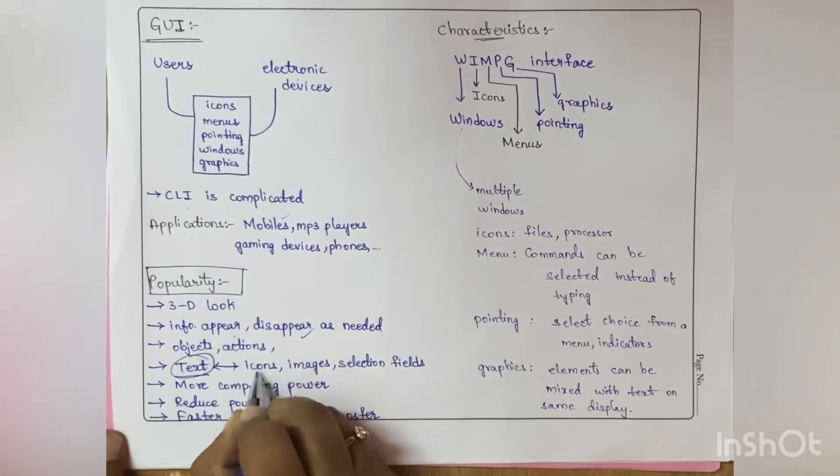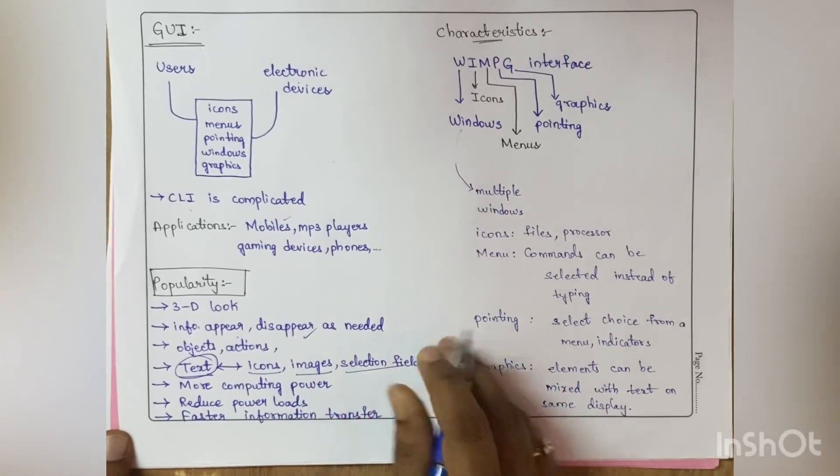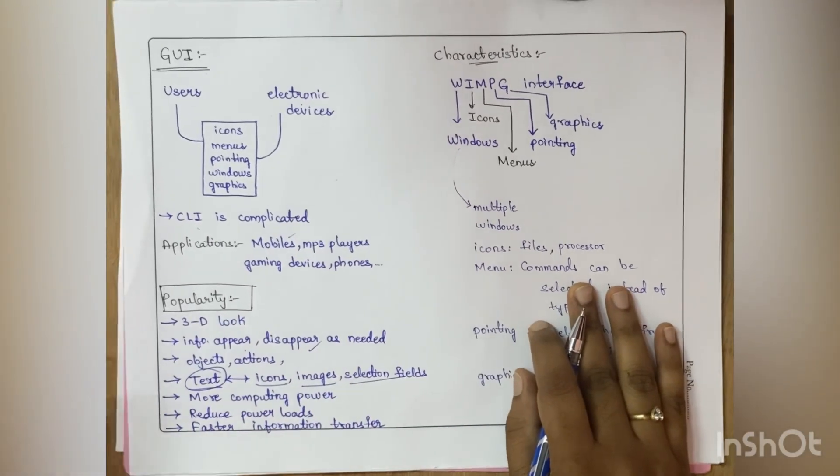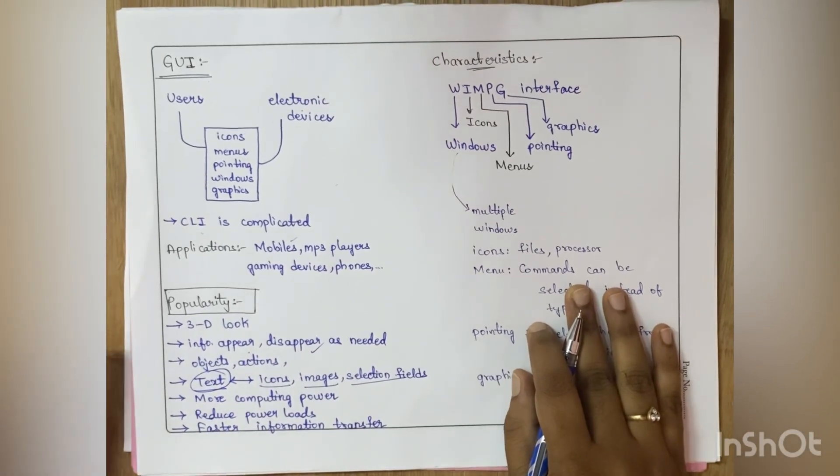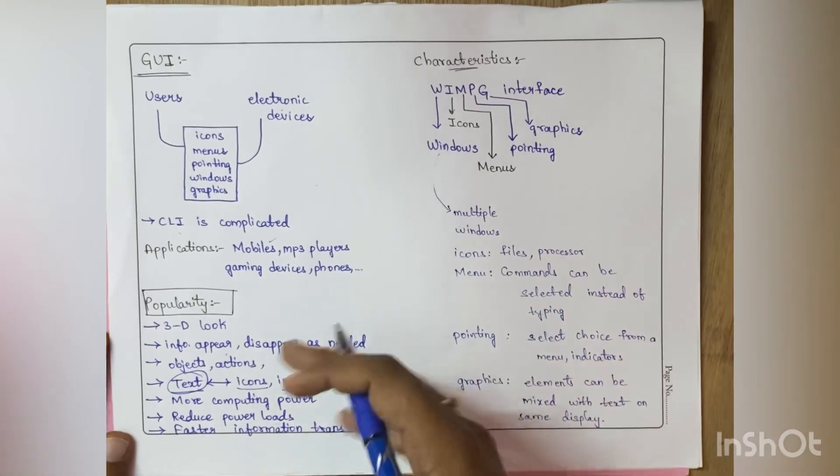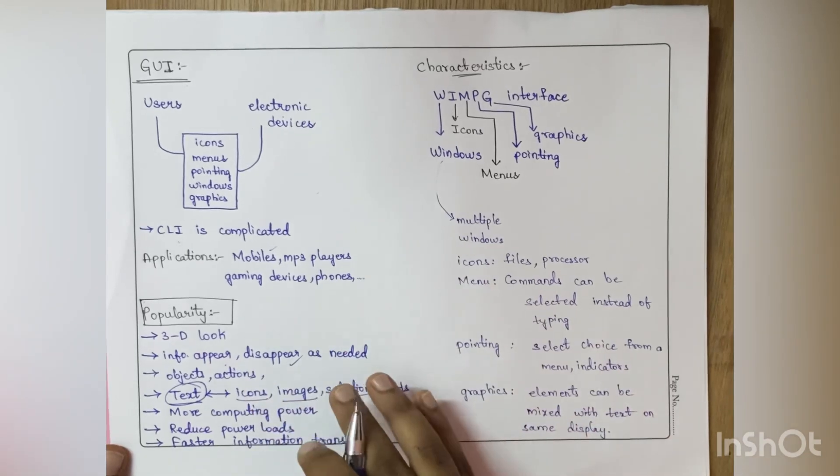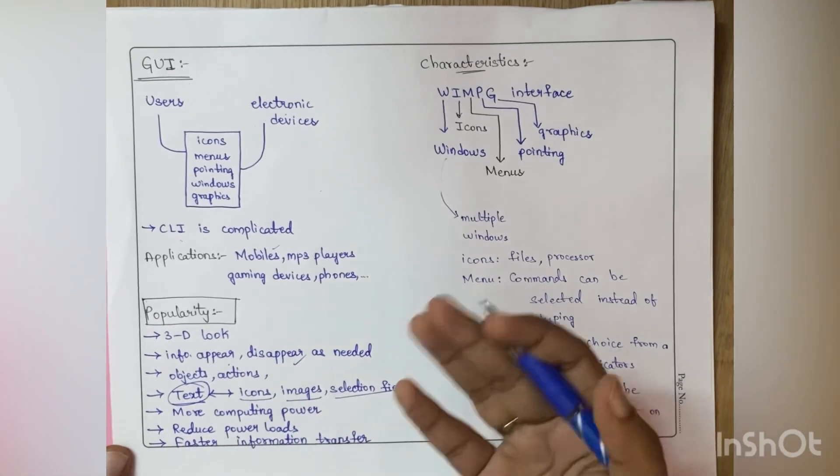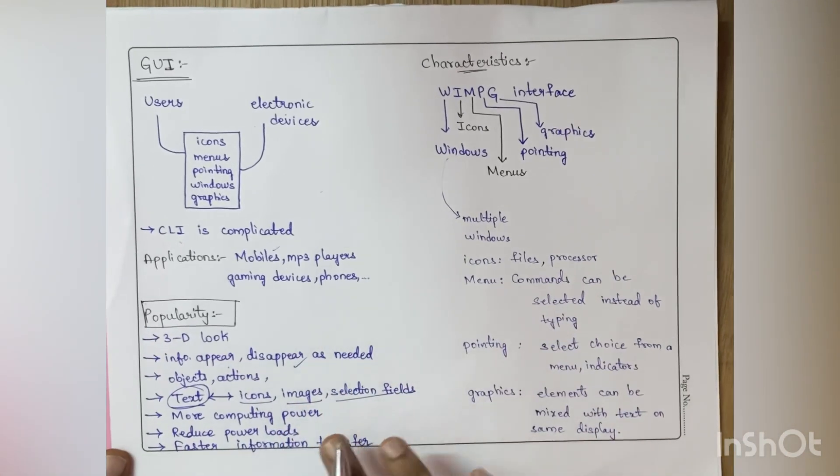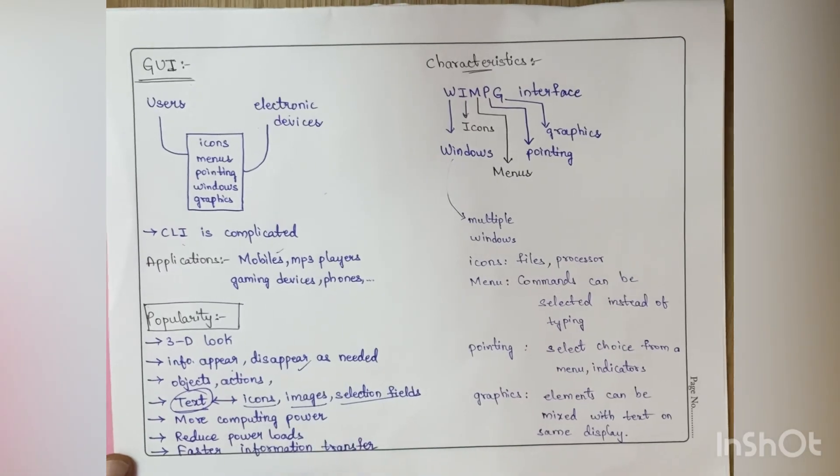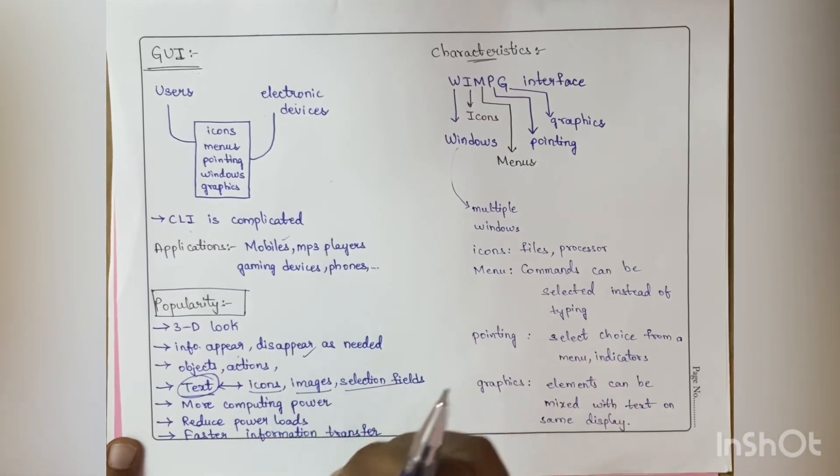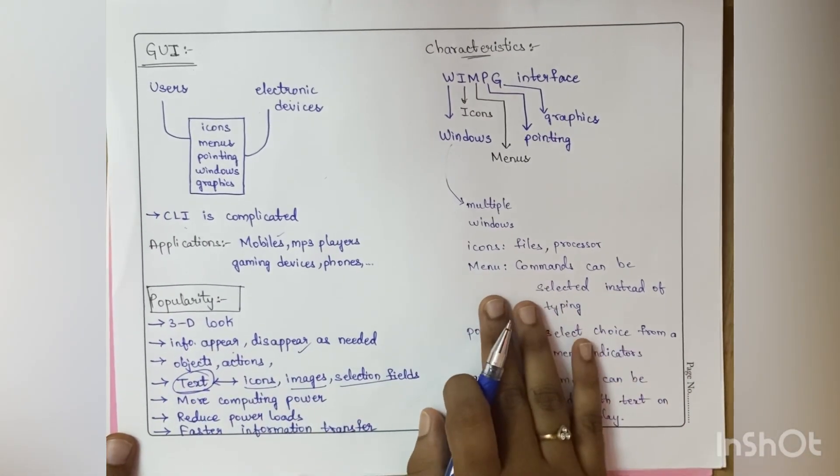Because of this GUI, the computing power has increased because now people are easily attracted to all these images. Symbols are very easy to remember than commands, so because of that the computing power increases. It also reduces the power load reports and enables faster information transfer. That means between two computers we can transfer any information very securely and fastly.